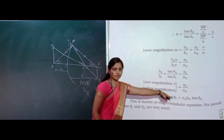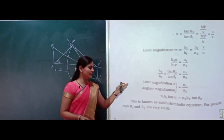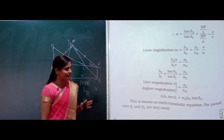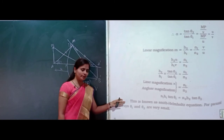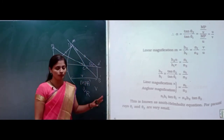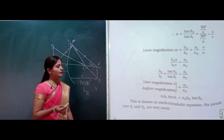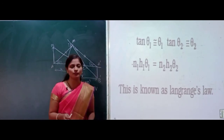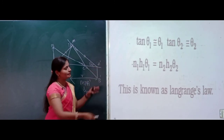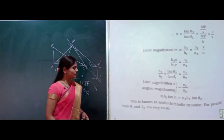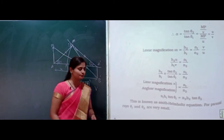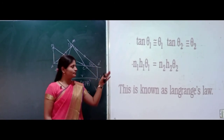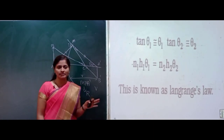Substituting, we get N1 H1 tan theta 1 equal to N2 H2 tan theta 2. This is known as the Smith-Helmholtz equation, valid for paraxial rays where theta 1 and theta 2 are very small. For paraxial rays, tan theta 1 equals theta 1 and tan theta 2 equals theta 2, giving N1 H1 theta 1 equal to N2 H2 theta 2. This is known as Lagrange's law.